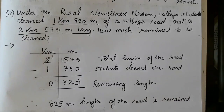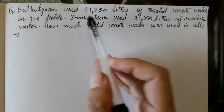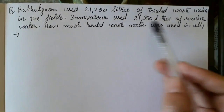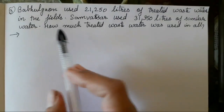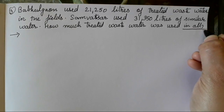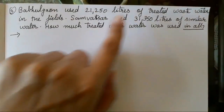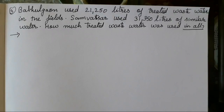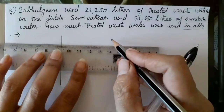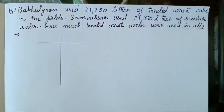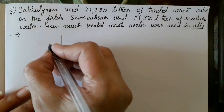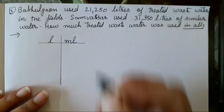Third question: Babul Gaur used a certain number of litres of treated waste water in their field and Sam Vatsar used a similar amount. How much treated waste water was used in all? 'In all' means we have to add these two amounts. It is easy to recognize the operation from the hint given in the question. 'In all' means we need to add the two amounts in litres and millilitres.